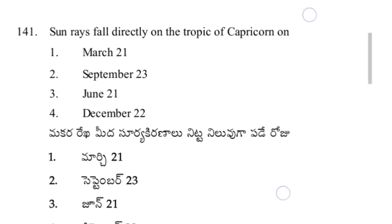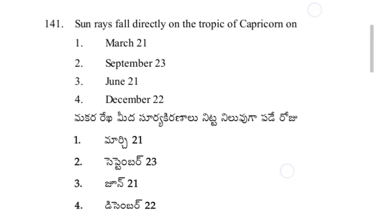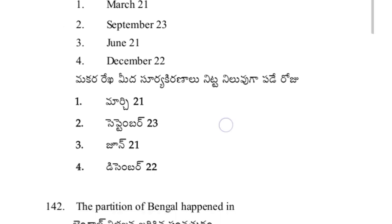Sunrays fall directly on the Tropic of Capricorn on December 22nd — option 4.